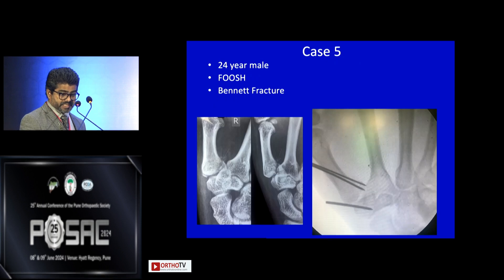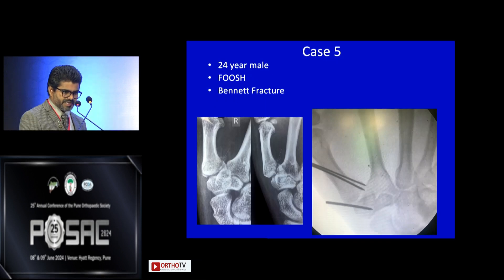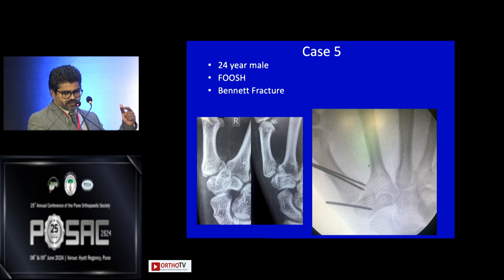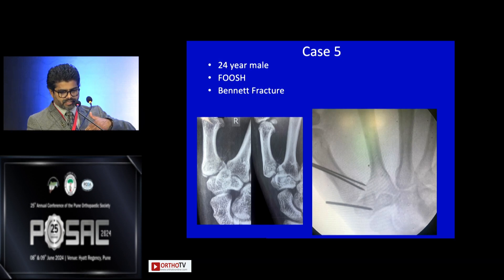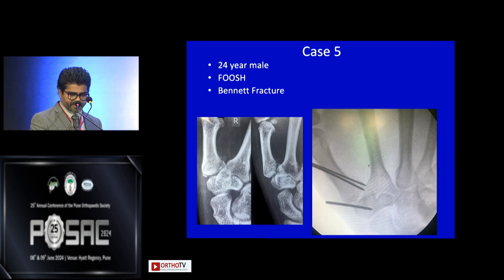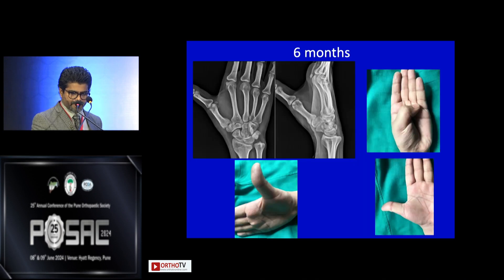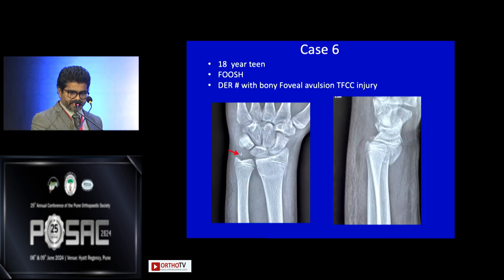Case number five: a 24-year-old male with a fall on an outstretched hand resulting in a Bennett's fracture. Holding that fracture and placing a K-wire is very tough. First you reduce by putting a wire in the joint, then you can fix the fragment very well. Good result at six months.